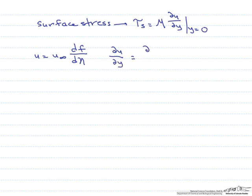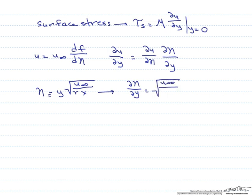This is the same as du d eta times d eta dy. Eta is defined as y times the square root of u infinity divided by nu, the kinematic viscosity, times x.